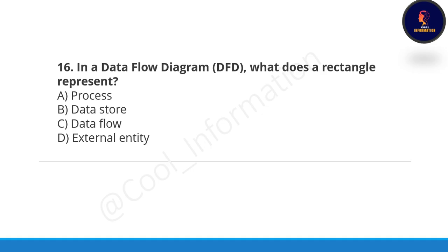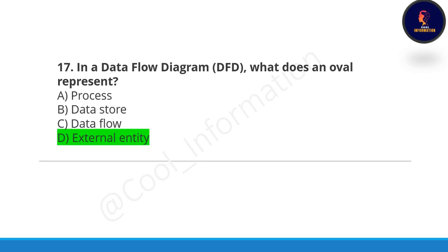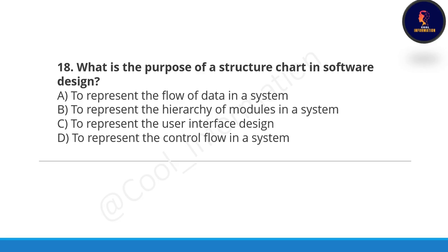16th question: in a data flow diagram, what does a rectangle represent? A rectangle actually represents a process, so option A is correct. Next question: in a data flow diagram, what does an oval represent? An oval shape actually represents an external entity, so option D is correct.